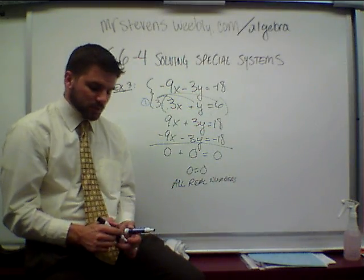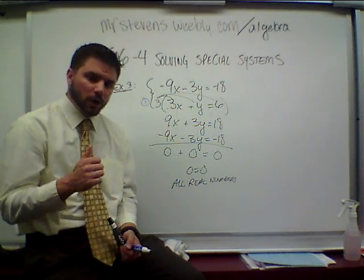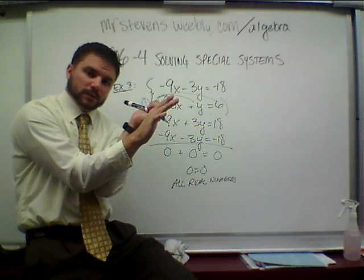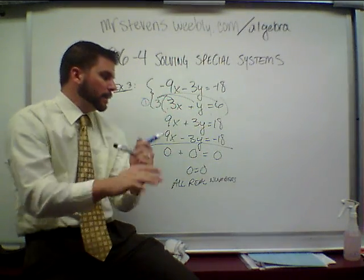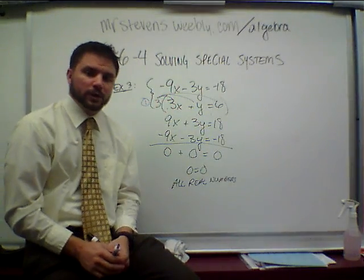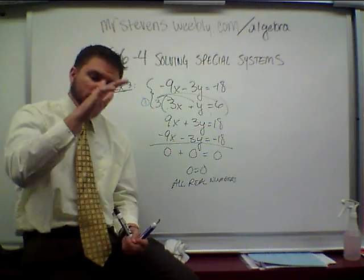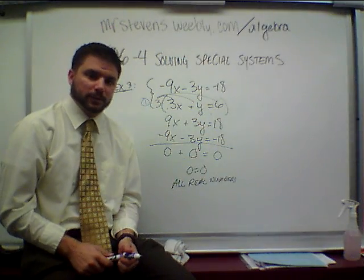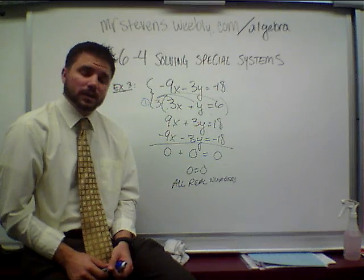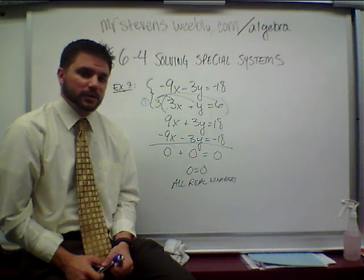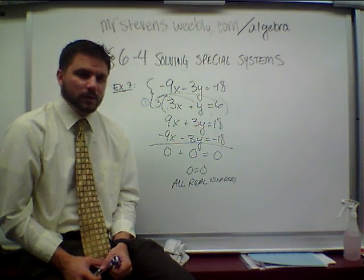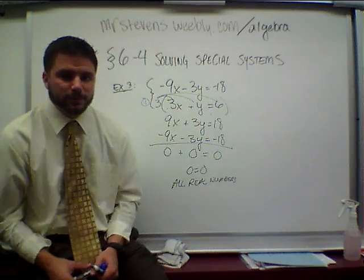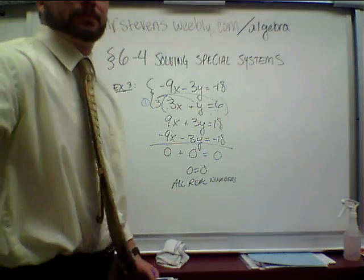So in special systems, we either have all real numbers — where they're the same exact line, same slope, same y-intercept — or there is no solution, meaning they have a different slope and they never actually cross each other. This is section 6-4, solving special systems. Go ahead and make sure that these are in your notes, and we'll talk about it during class.